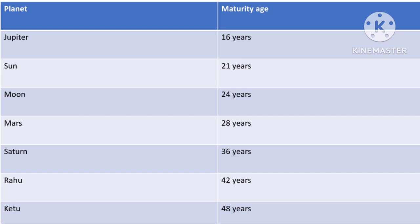Jupiter is also the karaka for marriage and children, so at the age of 16 a woman's body also becomes capable of bearing children. As per government rules, an adult is 18 years and above — that is the point where Jupiter's effects will be maximum and you should be mature enough to handle Jupiter's energy.